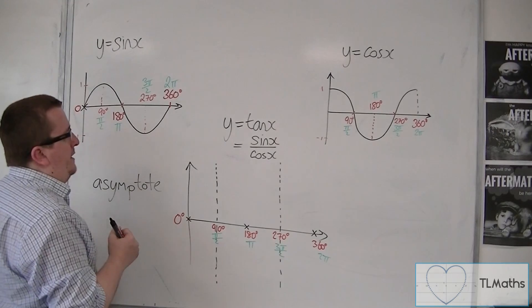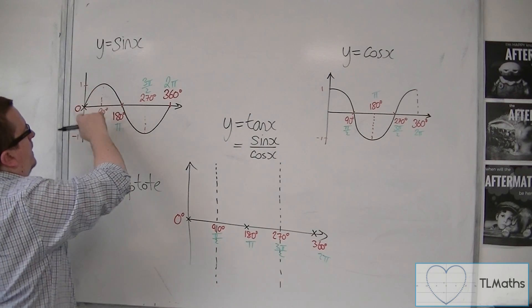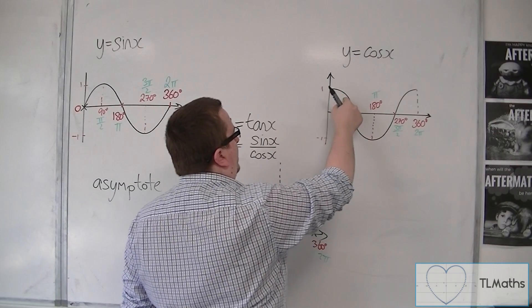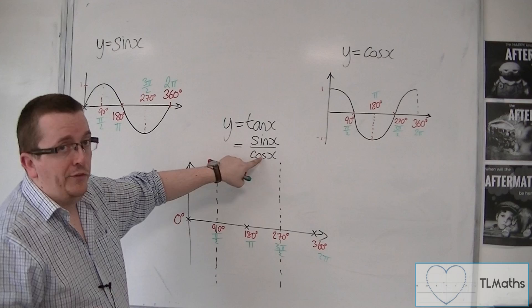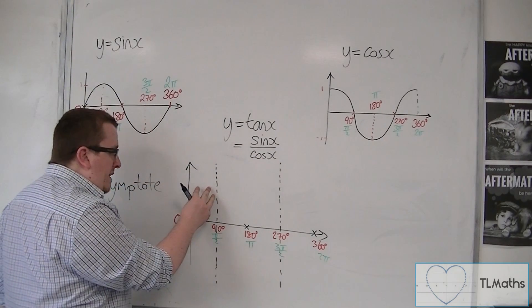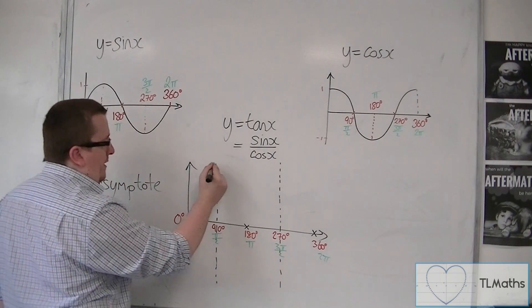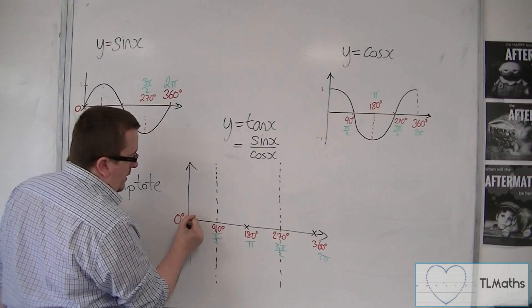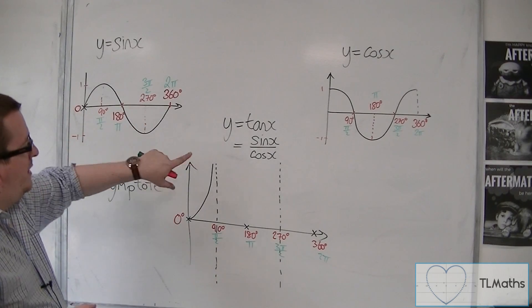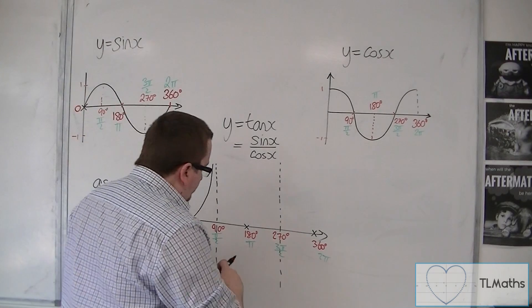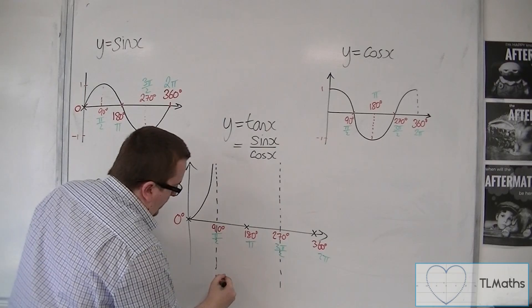Between 0 and 90 degrees, sine is above the x-axis and positive, and cos x is also above the x-axis and positive. When you're between 0 and 90, you have a positive divided by a positive, so tan must be positive as well. Because it must approach this line as it is an asymptote, the curve must look like this. Between 90 and 180, you've got positive over negative, so that would be negative, so the curve must be down here.